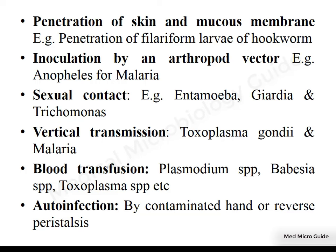Parasites which can be transmitted from mother to baby are Toxoplasma gondii and malaria. Parasites transmitted through blood transfusion include Plasmodium species, Babesia species, Toxoplasma species, Leishmania species, etc. Auto-infection is one in which contaminated hands or the process of reverse peristalsis re-establishes the infection in the same host.